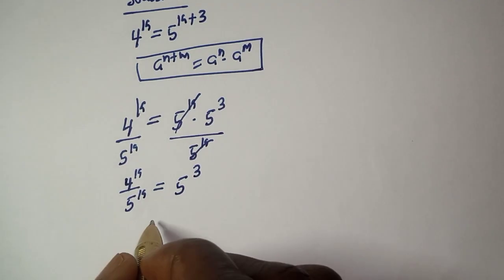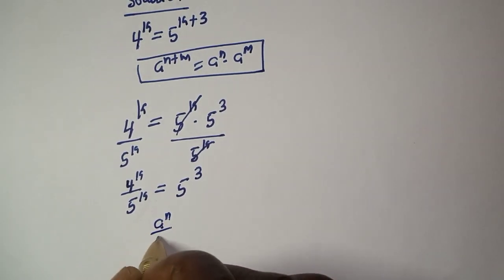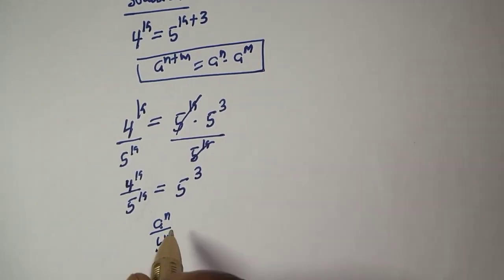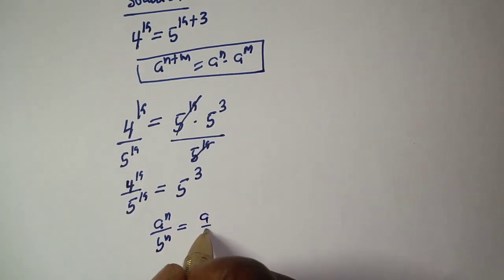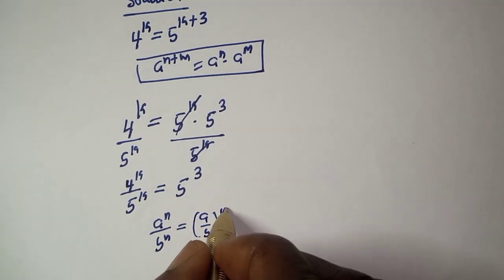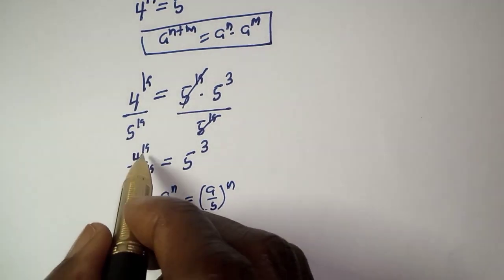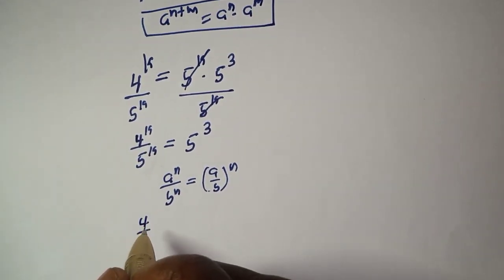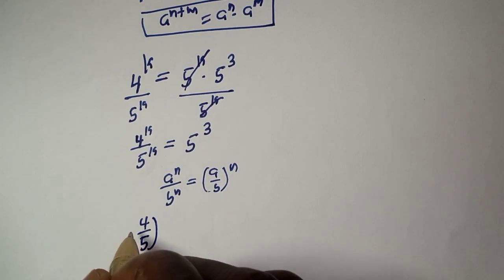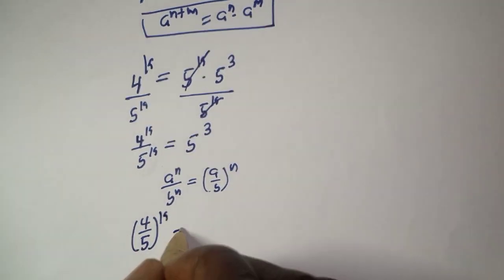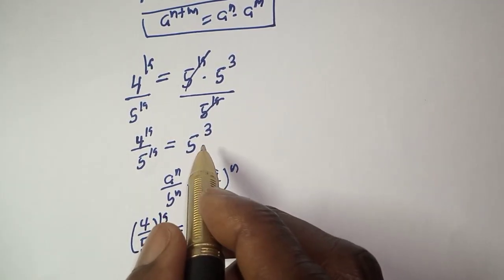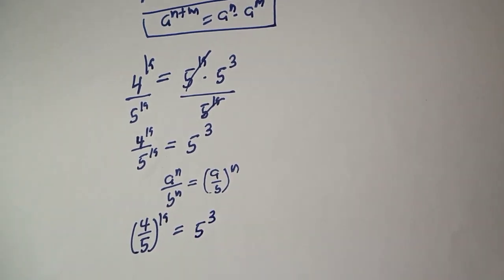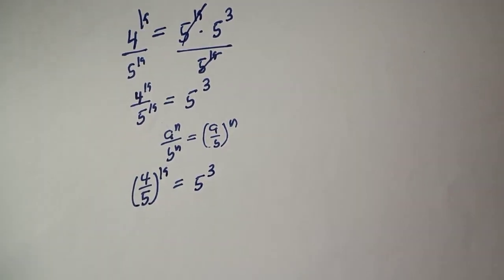Also, if you have a raised to power n over b raised to power n, this is equal to a over b raised to power n. Then this can be written as 4 over 5 raised to power k is equal to 5 raised to power 3.